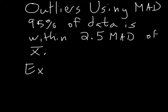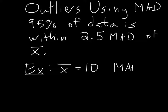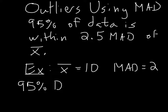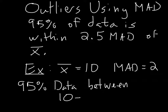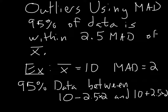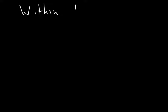So if we know we have a data set that has a mean of 10, and a mean absolute deviation, or MAD, of 2, then 95% of our data is between — at the lowest, 10 minus 2.5 times 2, and at the highest, 10 plus 2.5 times 2. So that means you can check it's within the range 5 to 15, if you just do that little calculation.